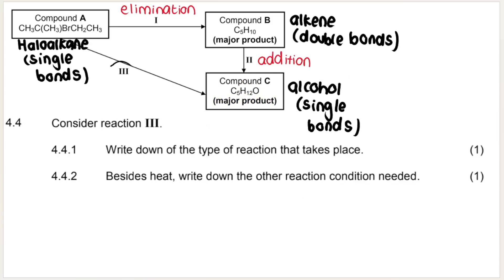4.4 says, consider reaction number three. Take note. We are going from something with single bonds, a haloalkane A, to something with also single bonds, alcohol C. So when we go from single to single bonds, the type of reaction that takes place is called a substitution reaction. Single, single, substitution. And that alone will get you your one mark. But if you want to give the specific substitution reaction, you should know that if you have a haloalkane and you're turning it into an alcohol, OH is going to be involved somewhere. Water potentially is one of our reactants. And that is therefore hydrolysis. Hydrolysis is our substitution reaction.